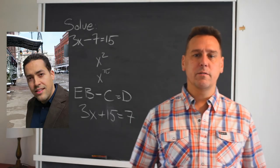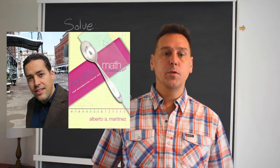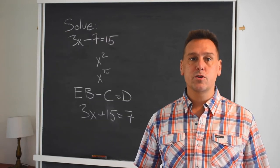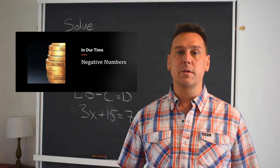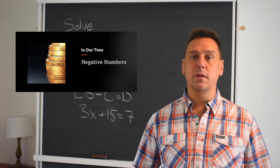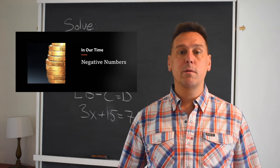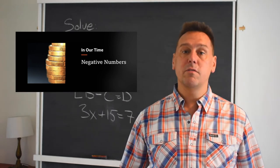Alberto Martinez recently wrote Negative Math, how mathematical rules can be positively bent, about both the origin and the philosophical complexities that negative numbers held. There's also a short radio introduction to negative numbers and their history from the BBC program In Our Time. I bring this last one up especially because it's a good example of something you can just go out and listen to briefly and come away with a deeper sense of how negative numbers evolved than almost anyone you'd meet, even mathematicians.